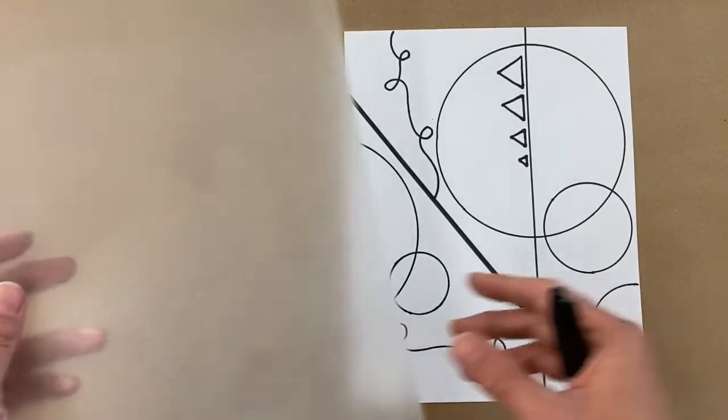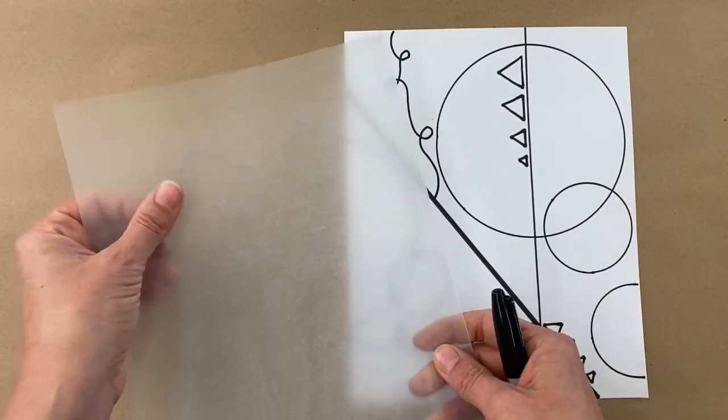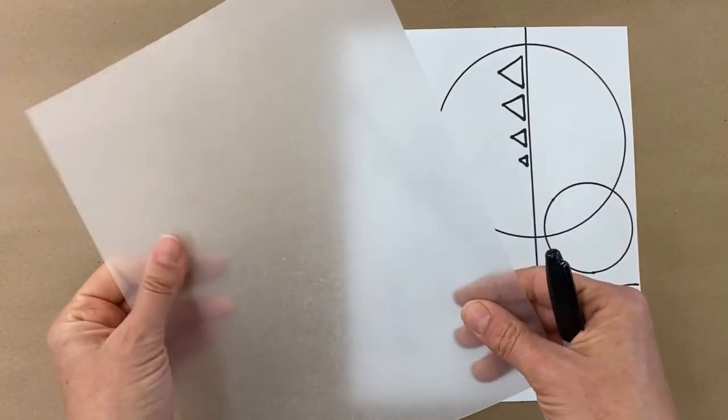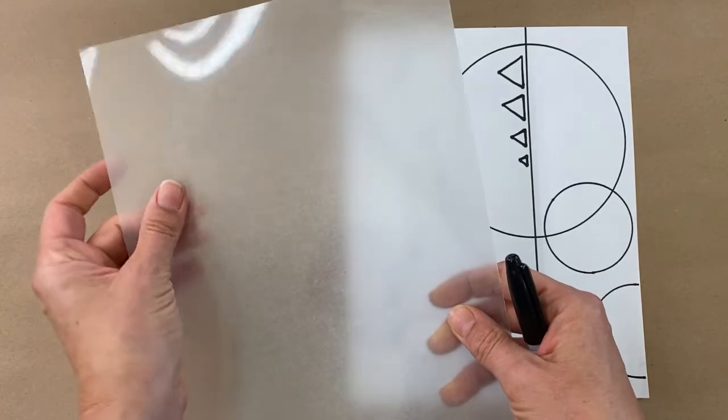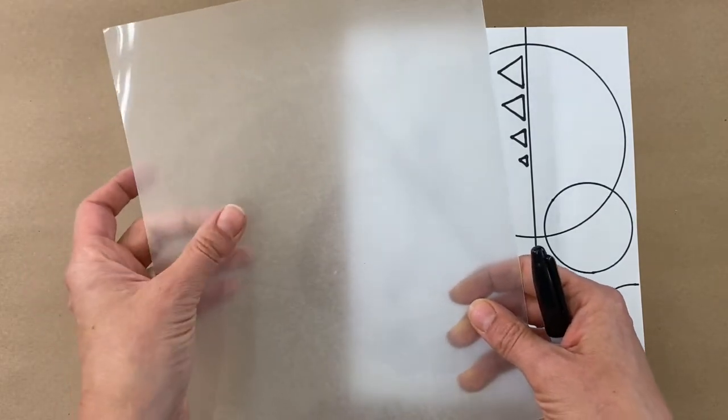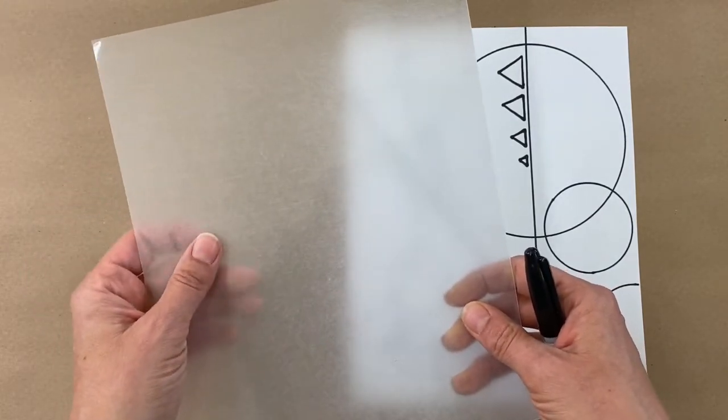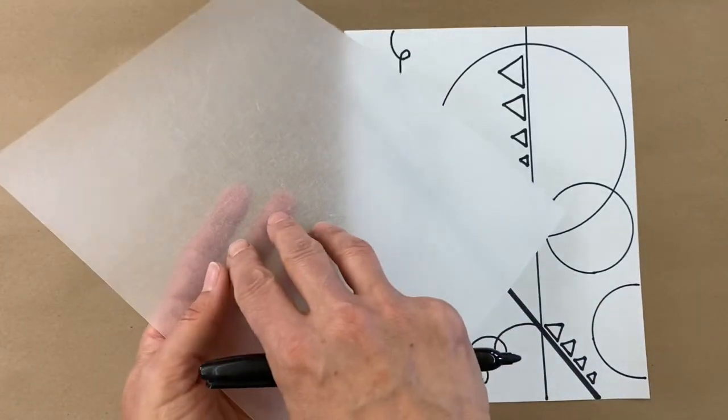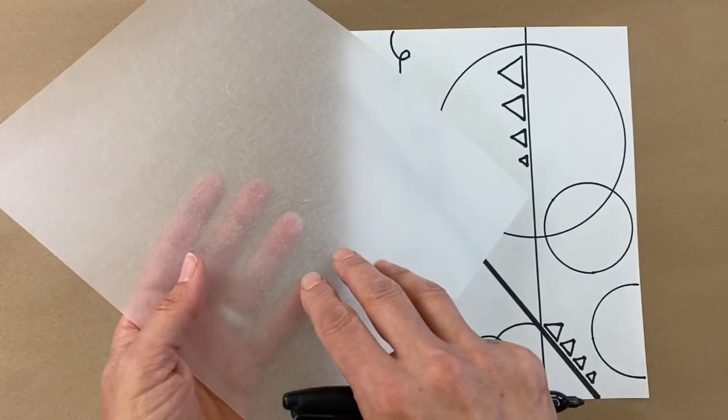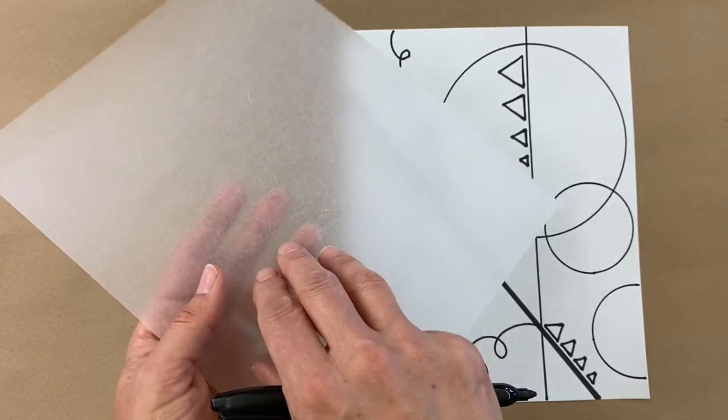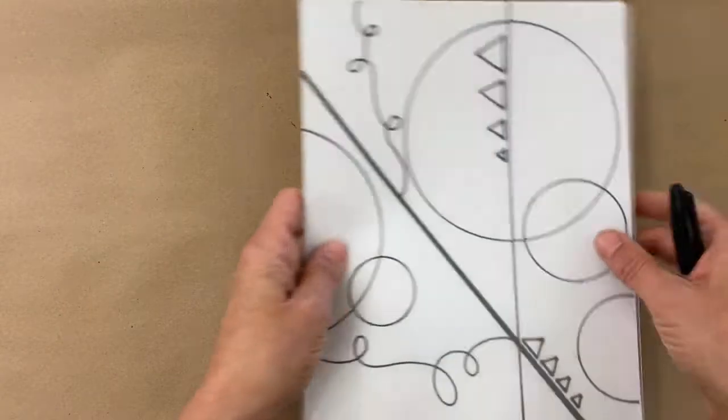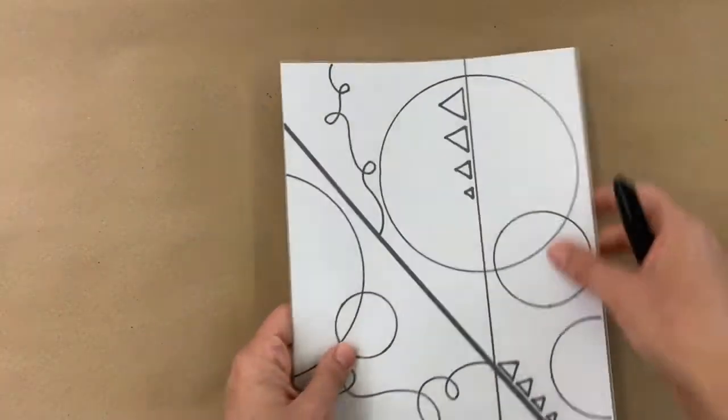So we're moving on to the Shrinky Dink. You'll notice that it has two sides. There is a shiny side and also a rough side. The shiny side is for Sharpie. The way I remember that is shiny and Sharpie. The rough side is going to be for the colored pencil that we will do later.